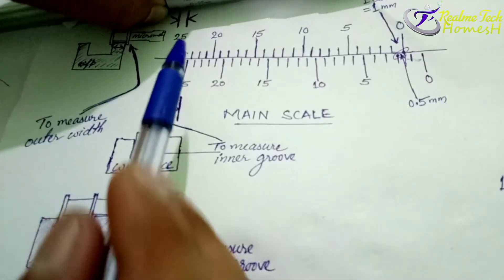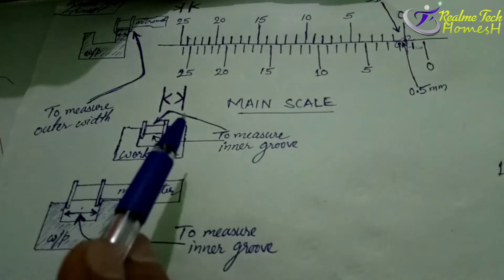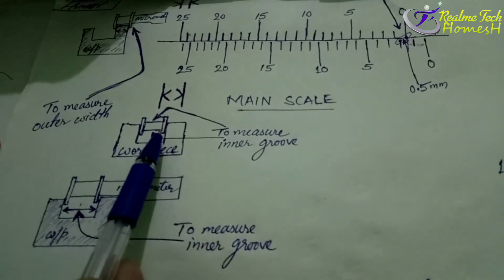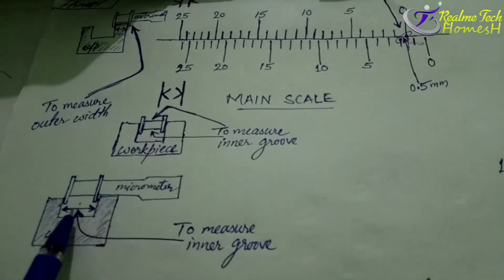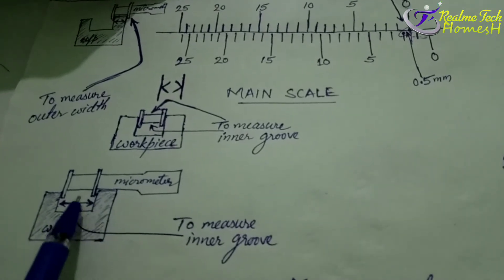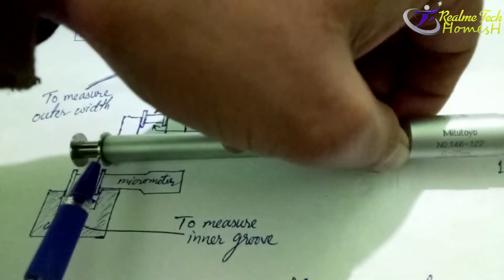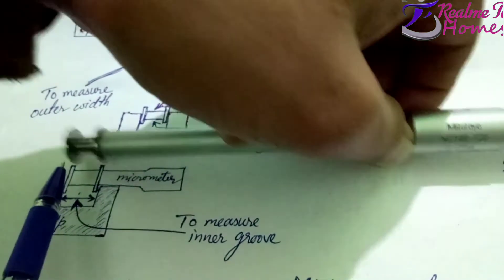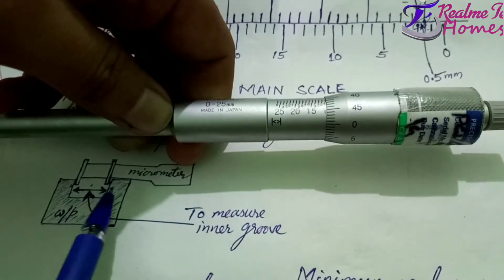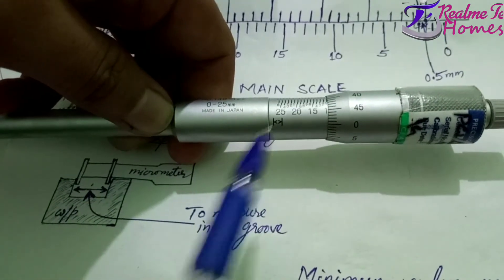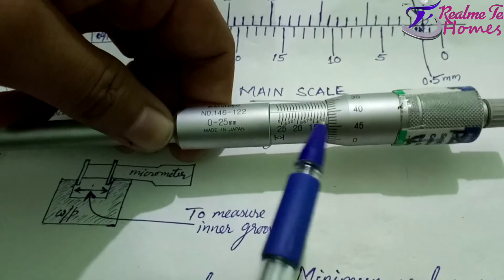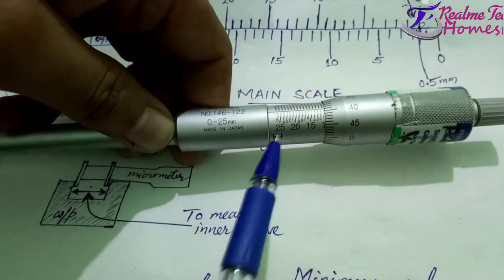To measure an internal groove, we insert the micrometer into the workpiece groove and measure from one side to the other. For this type of internal measurement, we prefer the below-line scale on the main scale. For internal groove thickness measurement, we read according to the below scale.